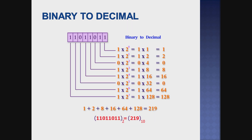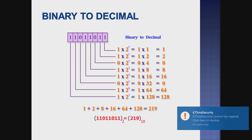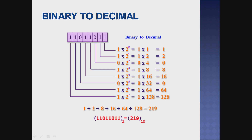So the next one is conversion of binary to decimal. For a binary number, the rightmost digit — LSB — is the least significant bit, and the leftmost digit — MSB — is the most significant bit. This is the multiply by powers of 2 method — a simple method. Every least significant bit represents 2 power 0, then 2 power 1, 2 power 2, and so on.